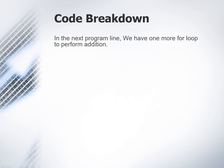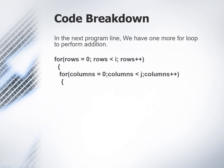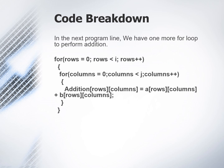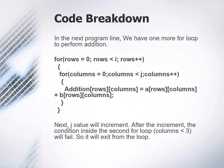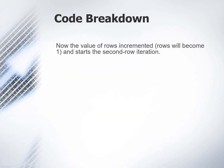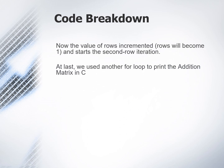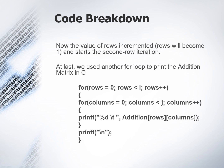In the next program line we have one more for loop to perform addition. Here's the addition for loop. In this for loop the addition matrix stores the corresponding sum of elements in matrix A and matrix B. Next the j value will increment. After the increment the condition inside the second for loop — columns less than 3 — will fail, so it will exit from the loop. The rows value is then incremented to 1 and it starts the second row iteration. At last we have used another for loop to print the addition matrix, which contains the printf statement: percentage d slash t, addition rows columns.